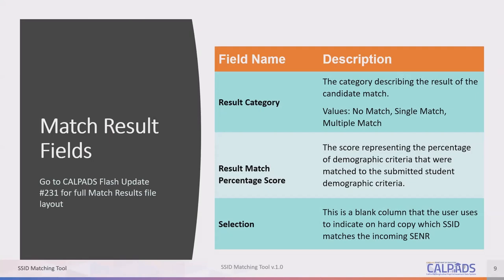Match results fields. Once the SSID match results file is downloaded, the user must review the results and determine which of the matches, if any, match the submitted student's information. There are three fields that help assist in matching included in the results file: the result category, the result match percentage score, and the selection field. The result category field shows either no matches found in the CALPADS ODS, a single match, or multiple matches.